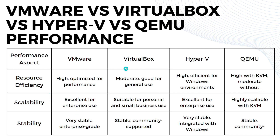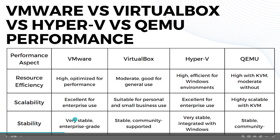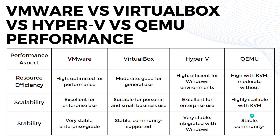When it comes to scalability, VMware is excellent for enterprise use, VirtualBox is suitable for personal and small business use, Hyper-V is excellent for enterprise use, and QEMU is highly scalable with KVM. Regarding stability, VMware is very stable at enterprise grade, VirtualBox is stable with community support, Hyper-V is very stable integrated with Windows, and QEMU is also stable with community support.